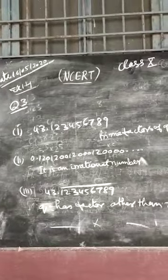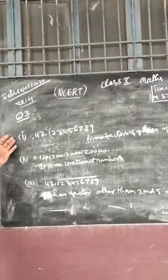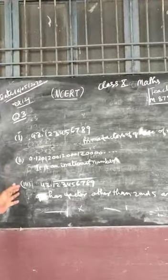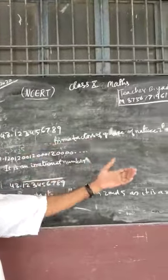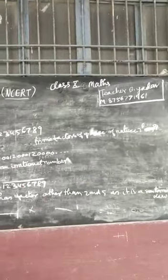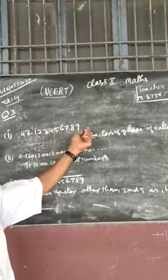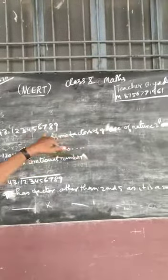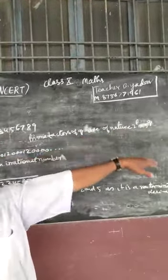Question 3 requires checking whether the given numbers will have denominator factors of only 2 and 5, or other factors. In part 1, 43.123456789 is a terminating decimal, so the prime factors of its denominator Q are of the nature 2 to the power p × 5 to the power q, where p and q are positive integers.